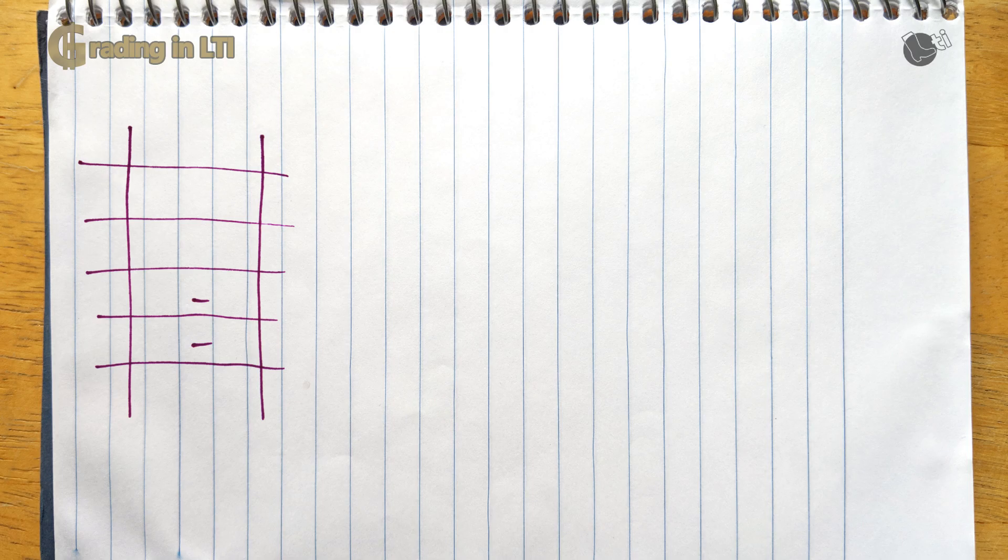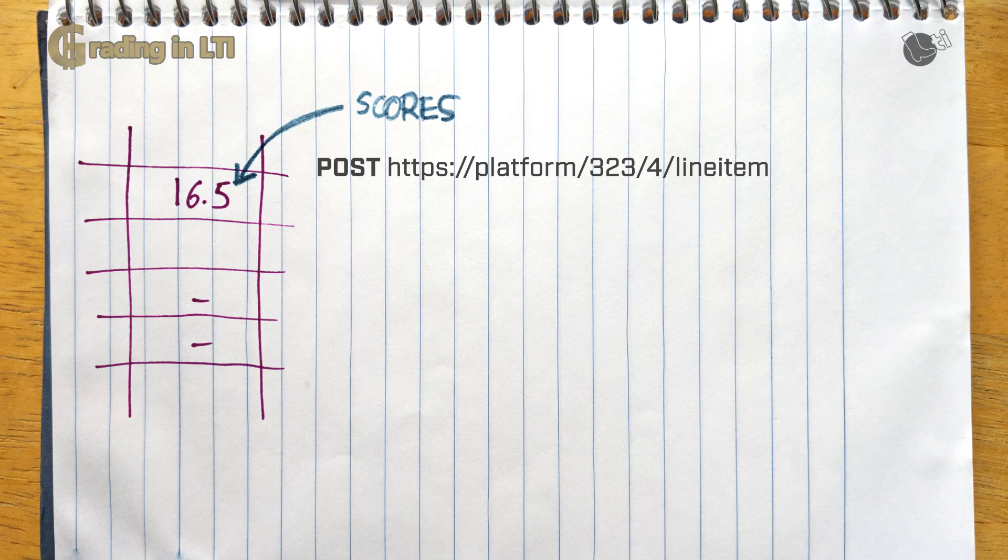So now that you have your buckets, you can actually post scores to it. The URL to post scores is a line item URL with scores appended to the path. Now, note that sending scores is a write-only operation. Tools post score updates. So the only operation permitted on that URL is post. No get, no put, no delete, just post.